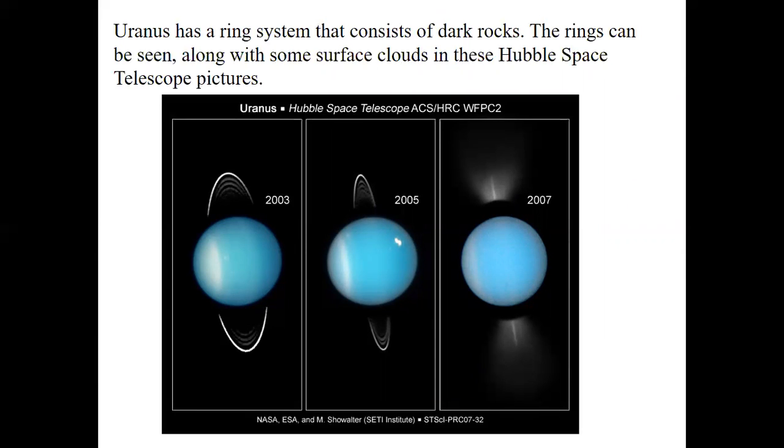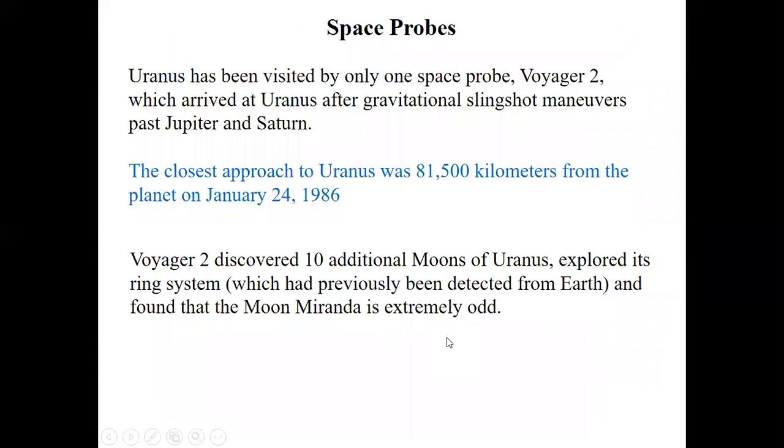In most pictures, you don't see a ring for Uranus, but it does have a ring system. It consists of dark rocks. The rings can be seen along with some surface clouds in these Hubble Space Telescope pictures. These are the rings around Uranus. Here, this is cloud showing the rings as well.